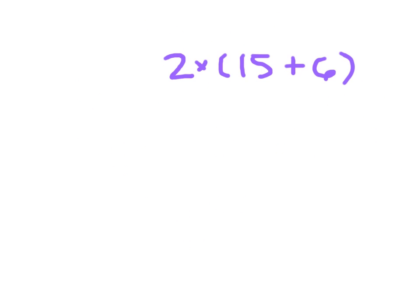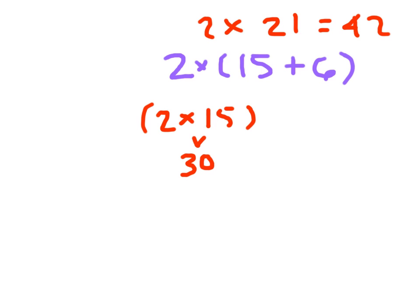The distributive property works with this type of problem as well, where we're distributing the 2 times, not only to the 15, but also to the 6. Maybe you know your 2 times 15 fact so well that you're going, oh, 15 doubled, that's 30. And then distributing the 2 to the 6, that's 2 times 6, which is 12. And what would we do to those two numbers? We would add them. So 30 plus 12 is 42.